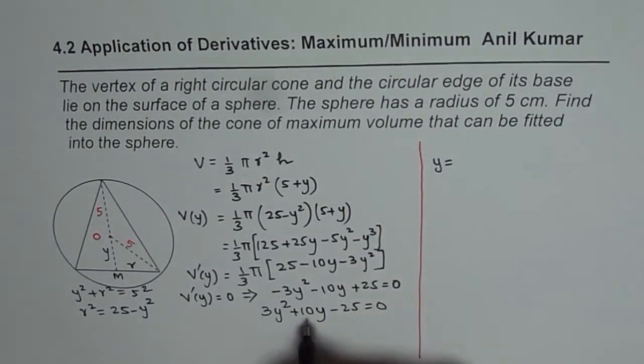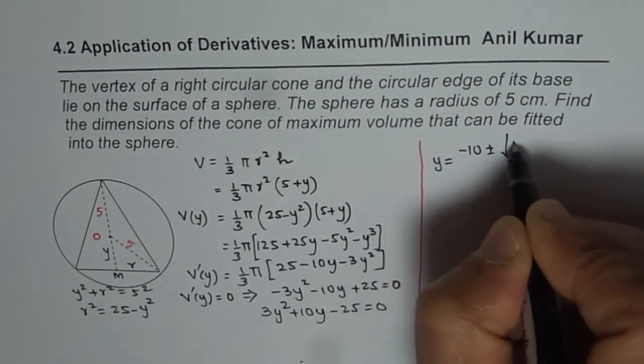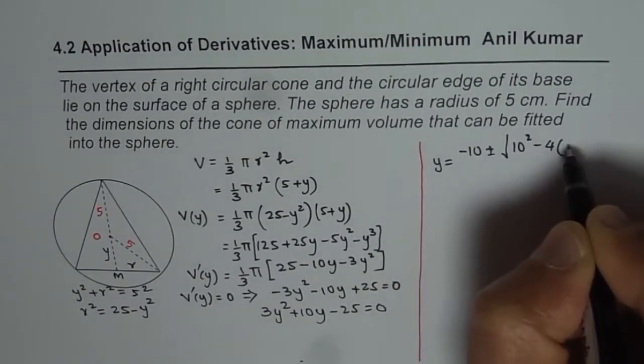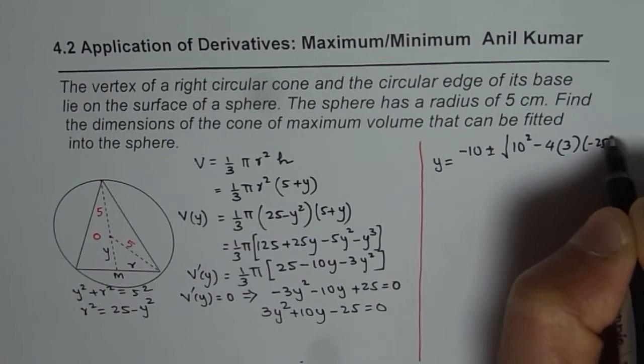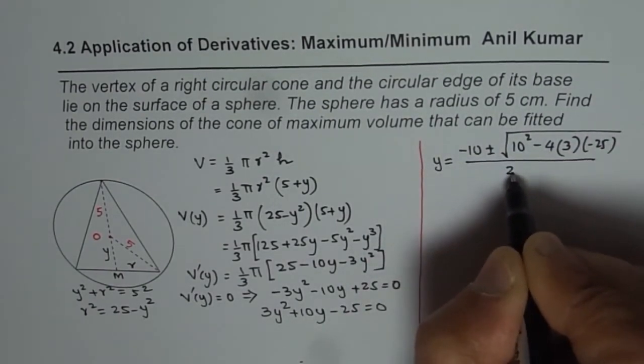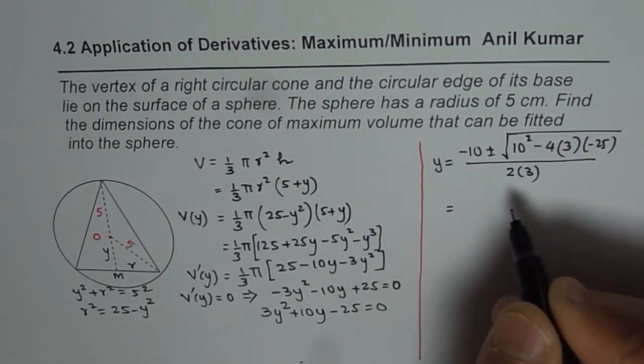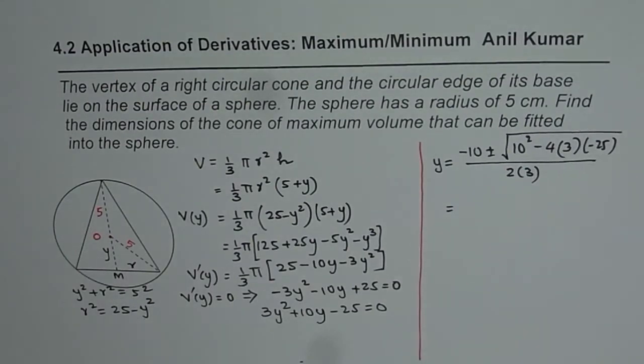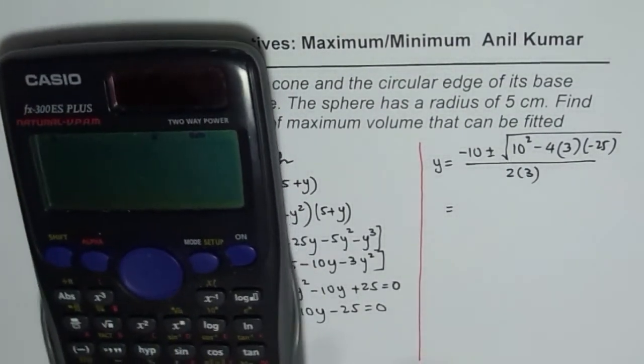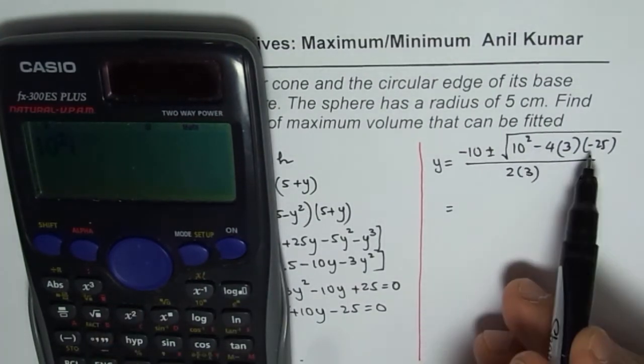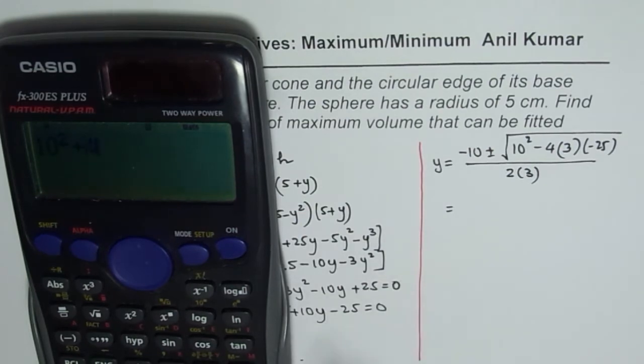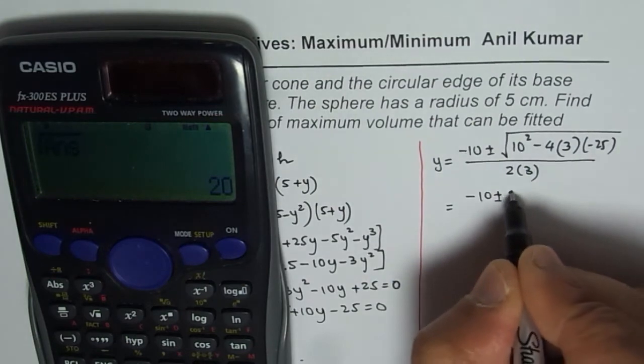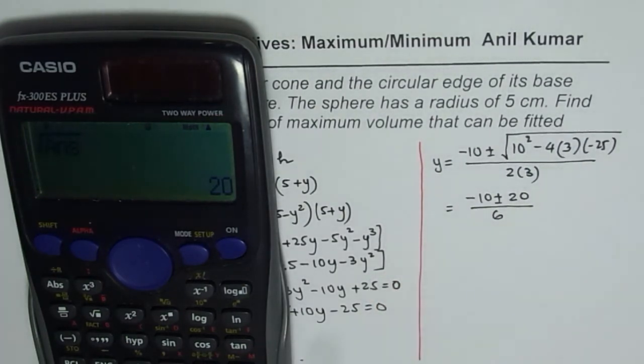So y will be equals to -b, which is -10, plus or minus b squared, which is 100, 10 squared minus 4 times ac. a is 3 and c is -25 square root divided by 2 times 3. So that is what we have. Now we can use calculator to find this answer, how much it is. So let us work out the square root part, which is 10 squared minus and minus is plus. So it gives plus 4 times 3 times 25. 400. So let us do square root of 400. So 400 square root is 20. So we get -10 plus minus 20 divided by 6. So that is the value.